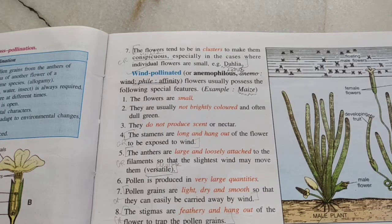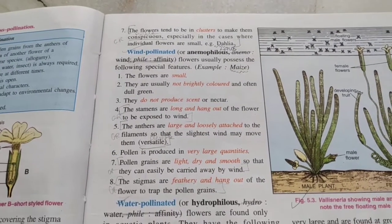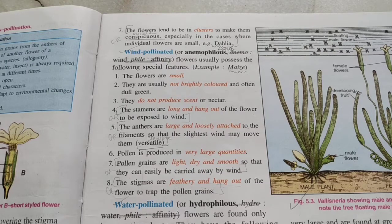The anthers are also loosely attached. Pollen grains must be produced in very large quantities since there is no certainty they will land on another flower. The pollen grains should be light, dry, and smooth so they can be easily carried by the wind. The stigmas should be feathery and hang out to easily trap the pollen grains.